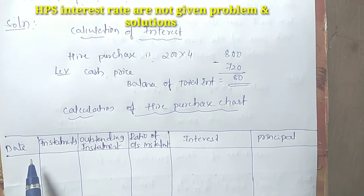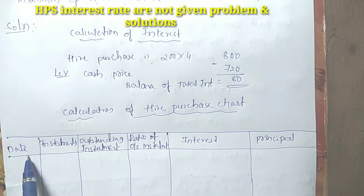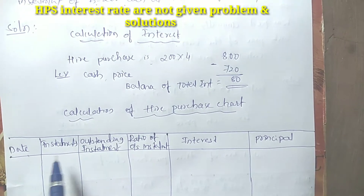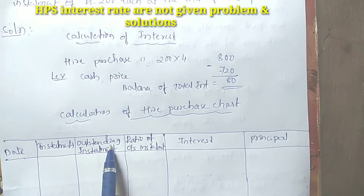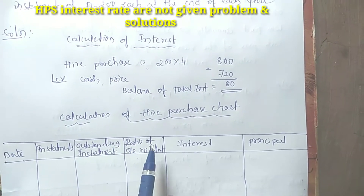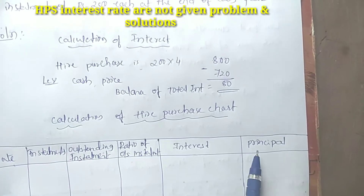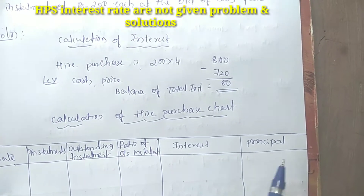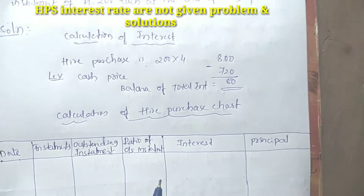Now set up the table with the following columns: Date, Installment, Outstanding installment ratio, Interest, and Balance of cash price.